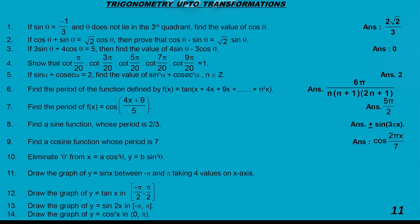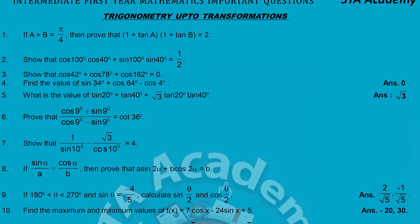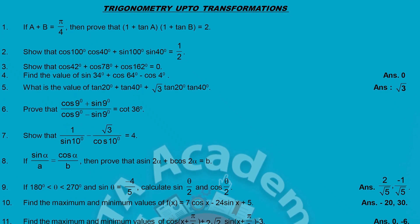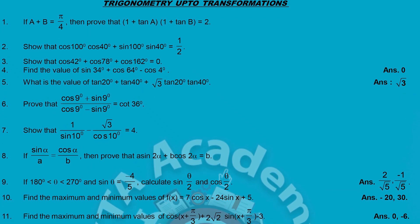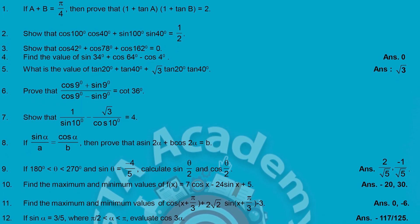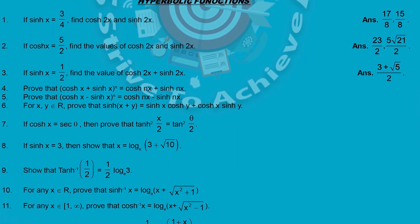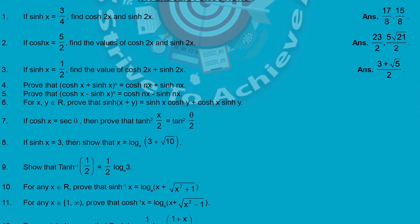Next is Trigonometry up to Transformation — we have 14 VSAQs. This is a very important chapter that will definitely give you two marks if you practice it. Another part of Trigonometry up to Transformation has additional problems — for example: if A + B = π/4, prove that (1 + tan A)(1 + tan B) = 2. These are very important — 12 questions in total.